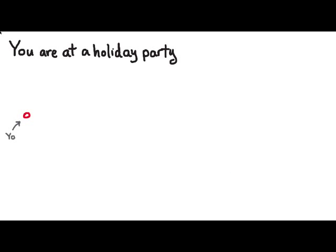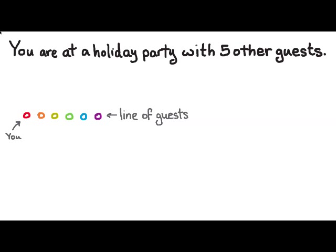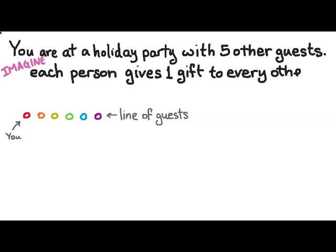So I want you to imagine that you're at a party. That's you. You're a little red circle, and you're there with five other guests. Here are all six of you in a line. I want you to imagine that each person gives one gift to every other person at the party. So here you are handing out gifts to all the other people at the party, and then you get back in line again so that you can get gifts from the other people.